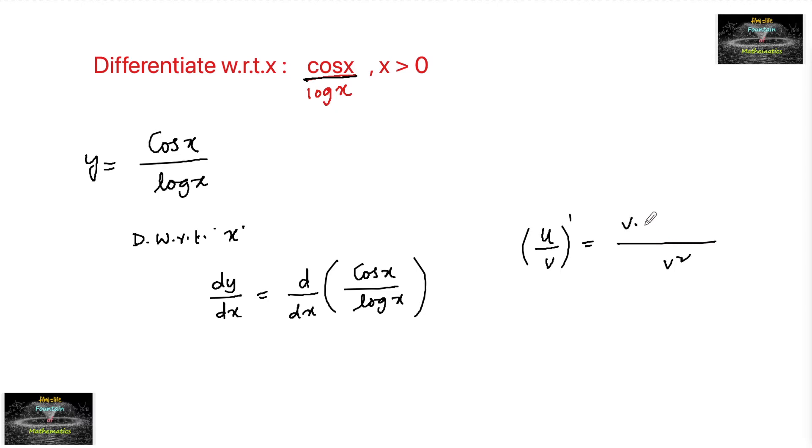v into u dash minus u into v dash upon v square. u of x equals cos x and v of x is log x, which equals upon log x whole square.